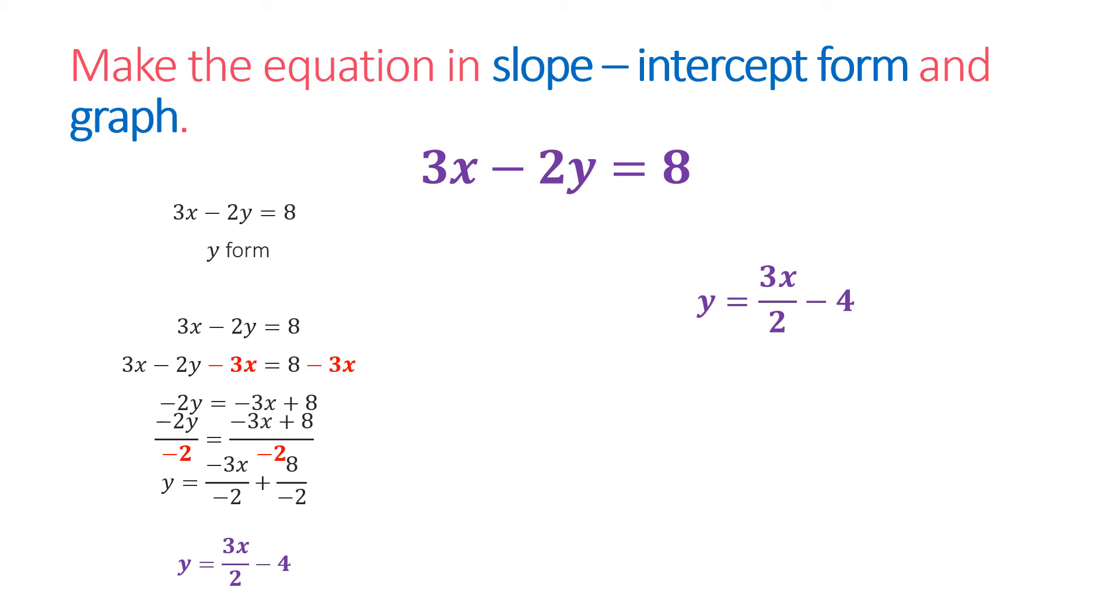In the analysis of the answer, y equals 3x over 2 minus 4, we have the slope as 3 halves and the y-intercept, which is b, equals negative 4.